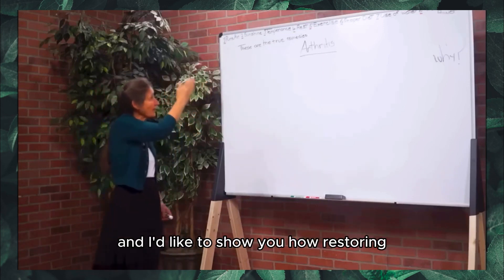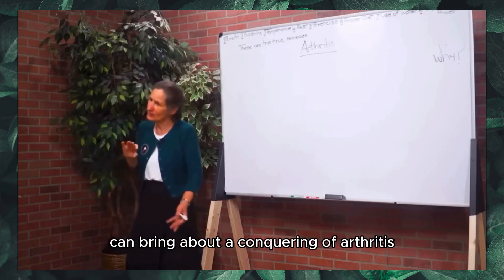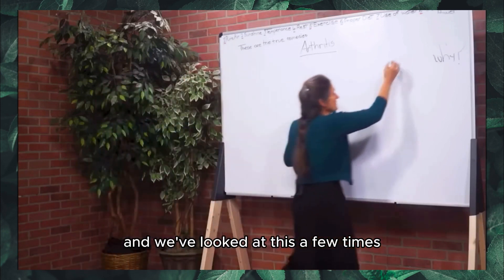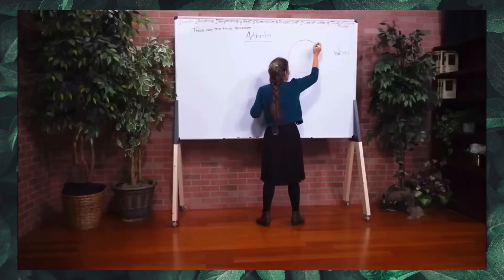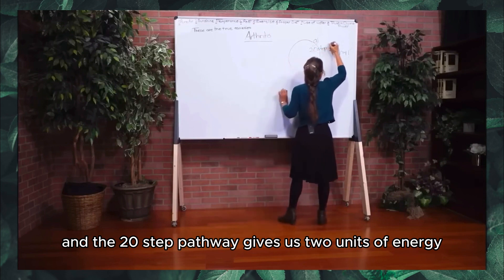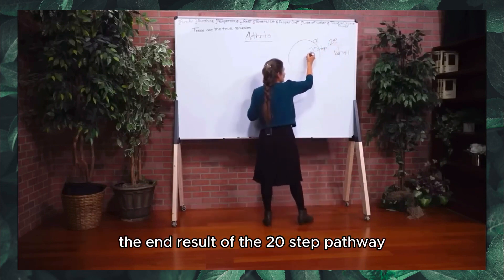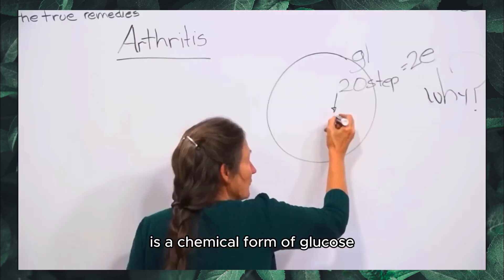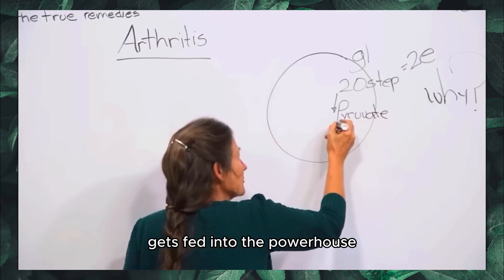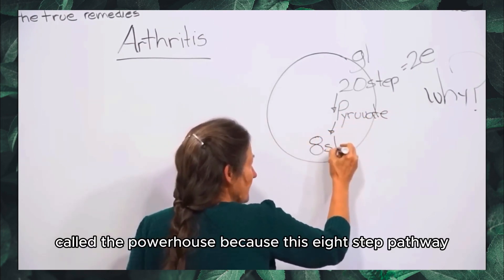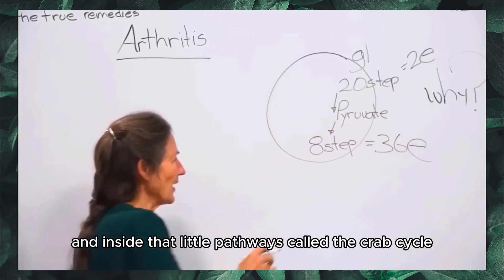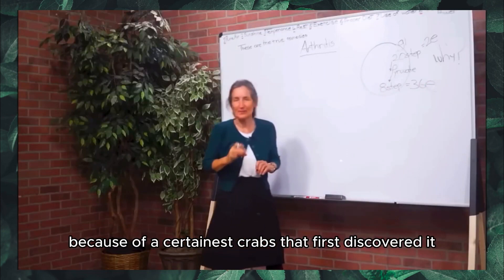I'd like to show you how restoring adherence to these laws can bring about a conquering of arthritis. We're going to look first at pure air. At the cellular level, glucose goes in through a 20-step pathway — the glycolytic pathway — which gives us two units of energy. The end result is a chemical form of glucose called pyruvate.